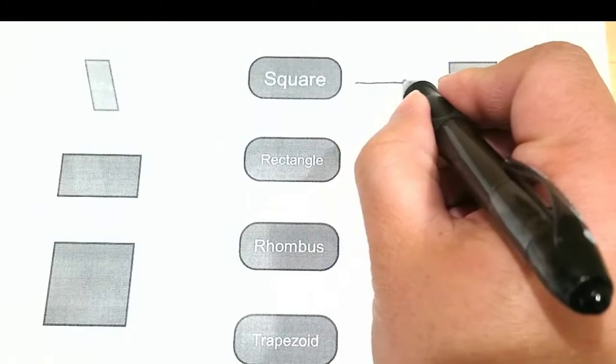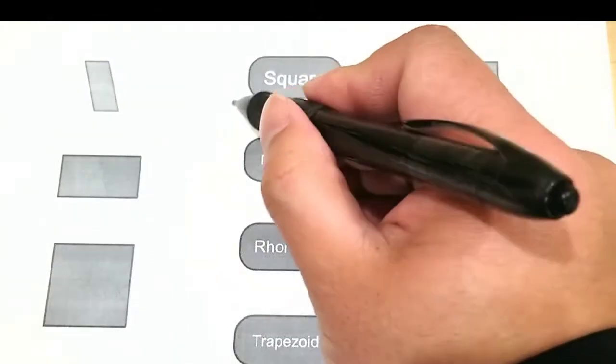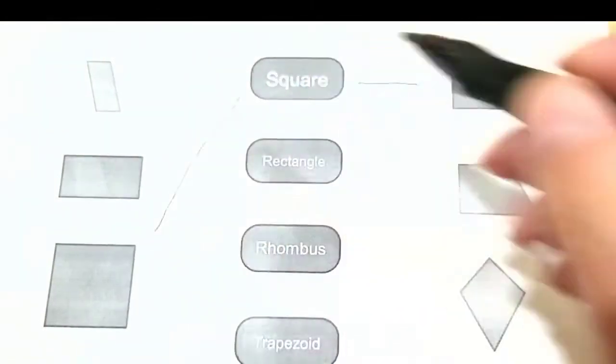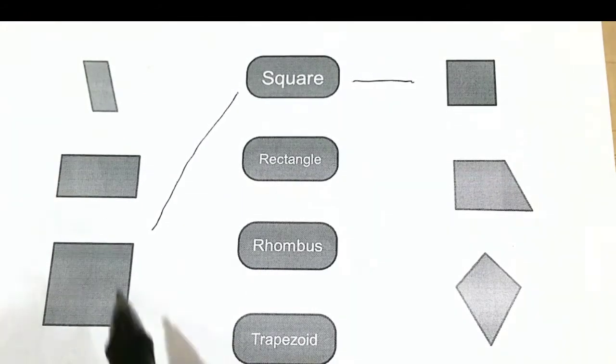So this over here is a square because it has four sides that are the same and four angles that are the same. And this is also a square because each of the lengths is the same side, and the angle, these little bent corners, they're the same angle.